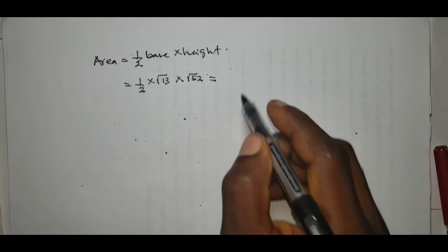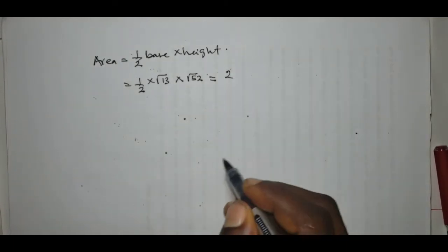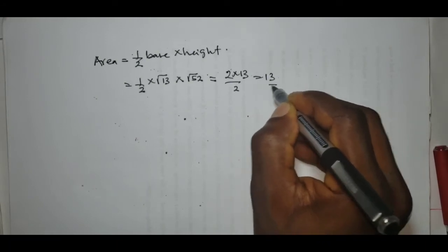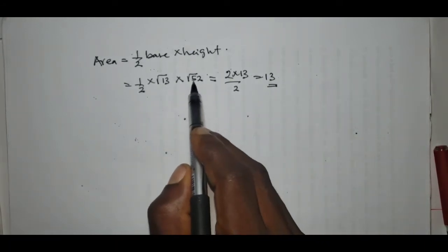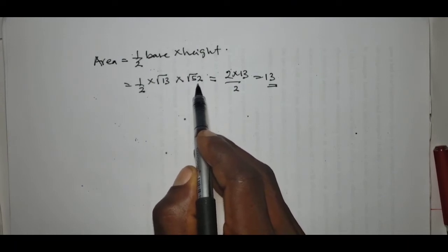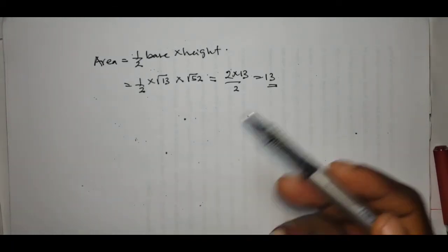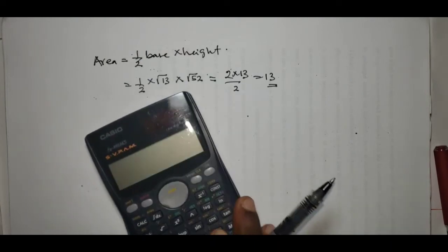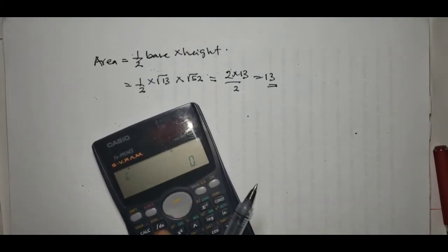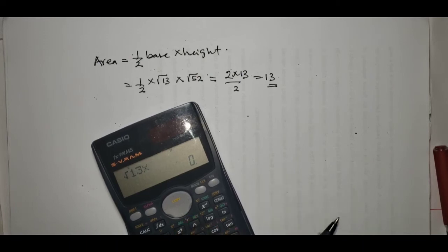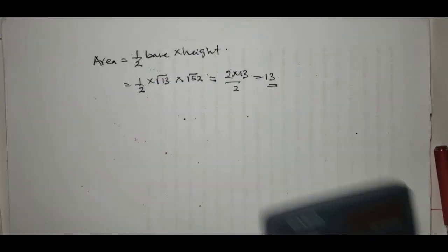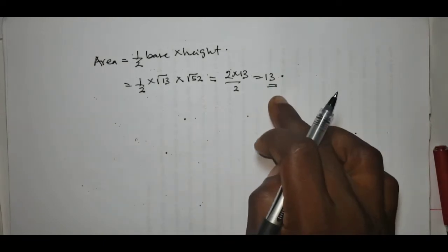Breaking this down: one-half times root 13 times root 52. Root 52 can be simplified to 2 root 13, so we have one-half times root 13 times 2 root 13, which gives us 2 times 13 over 2, equal to 13. Alternatively, root 13 times root 52 divided by 2 also gives 13. So the area of the triangle is 13 square units.